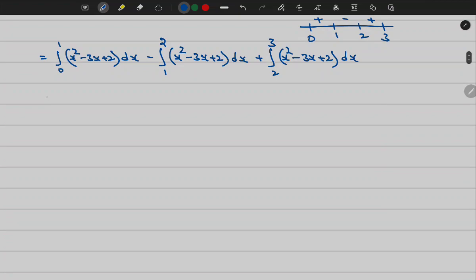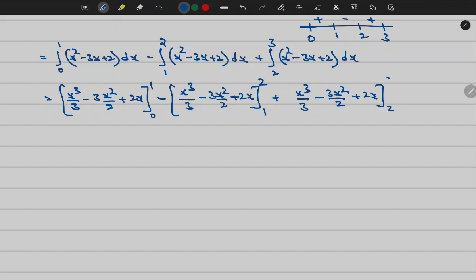Now let me apply the integration. Then x cube by 3 minus 3 x square by 2 plus 2x from 0 to 1, minus the same x cube by 3 minus 3 x square by 2 plus 2x from 1 to 2, plus the same from 2 to 3.